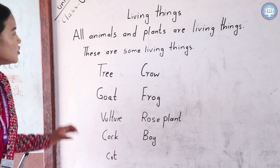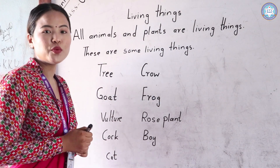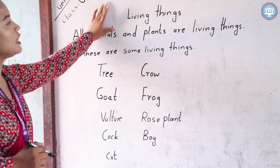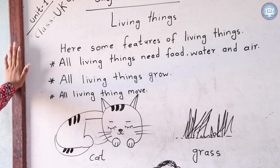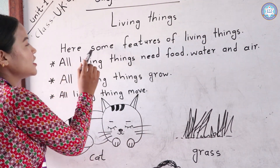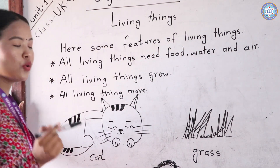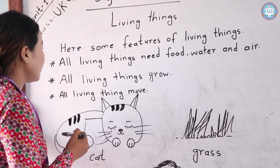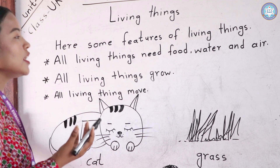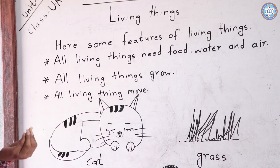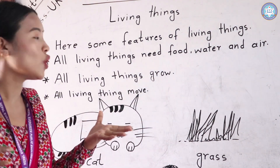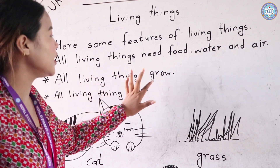Do you understand about living things? Now we are going to learn about features of living things. Here are some features of living things. Living things need food, water, and air. And all living things grow.